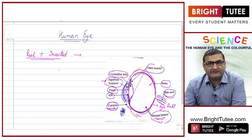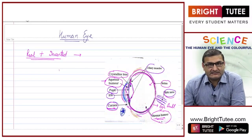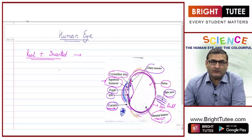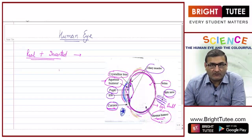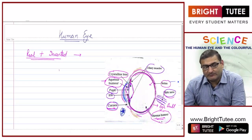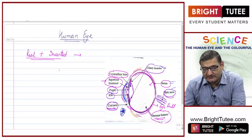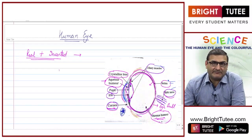This is all about the human eye. You will be asked either to draw the human eye and explain the labels and functions of each part, or answer one-marker questions such as: what is the role of iris and pupil, what is retina, what type of images are formed on retina, and which nerves carry the signals to the brain — those are the optic nerves.